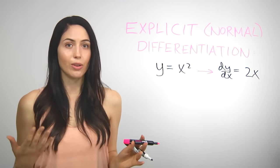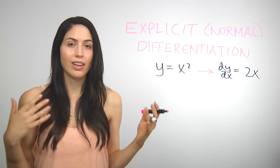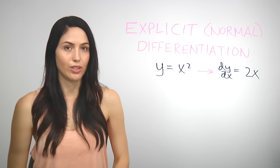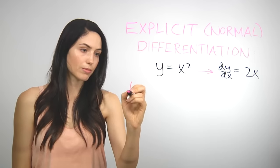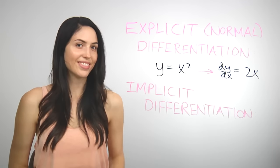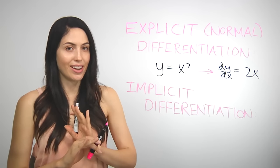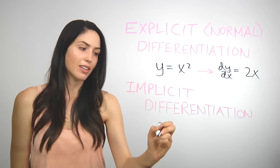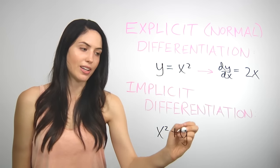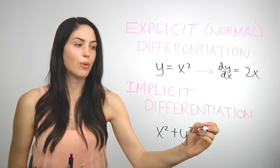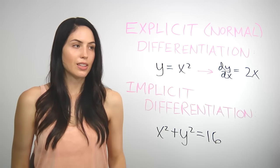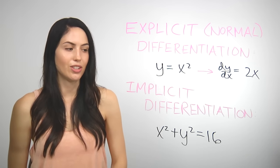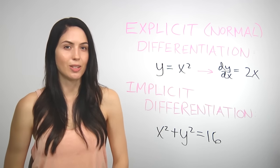But what if your function is not written as y equals some x expression? Well, then you have to use something called implicit differentiation. If your function is not written as y equals, but is instead written implicitly as a function of x — something like x squared plus y squared equals 16 — you can't do the normal explicit differentiation. You have to use implicit differentiation, which is basically just a special kind of the chain rule.